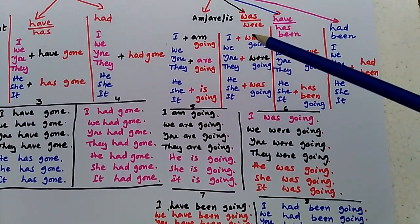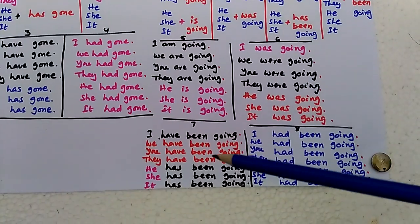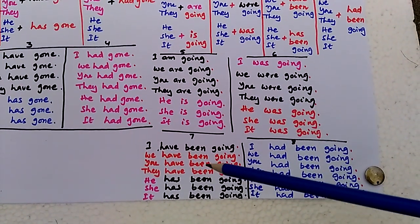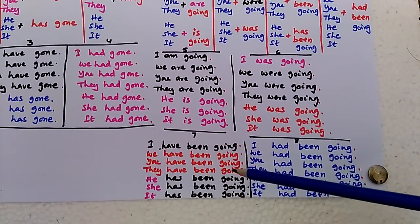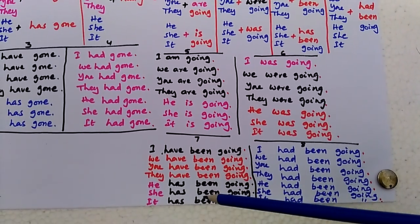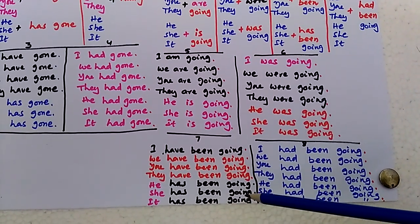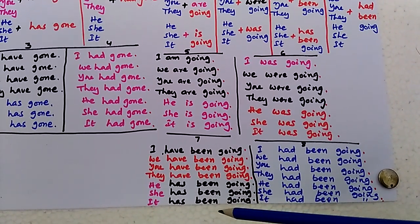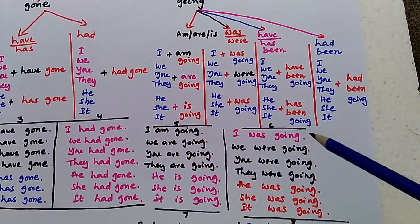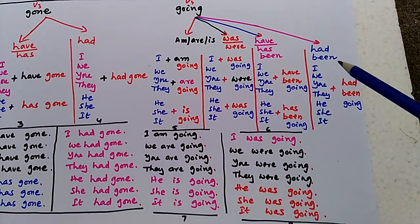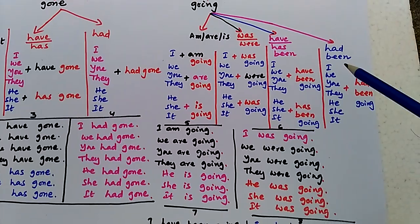By adding have or has been to 'going', we get the table: I have been going, we have been going, you have been going, they have been going, he has been going, she has been going, it has been going. Similarly, another phrase we can add is 'had been'.